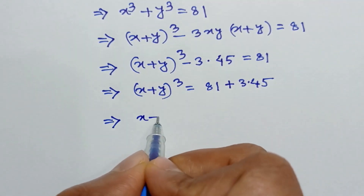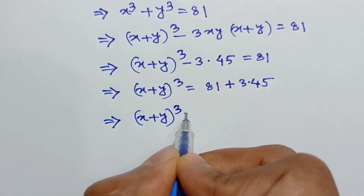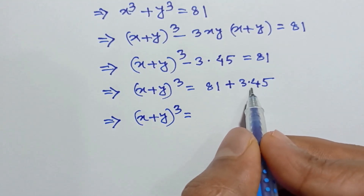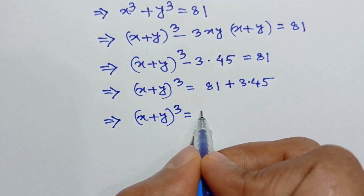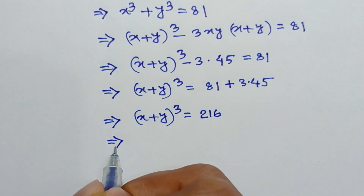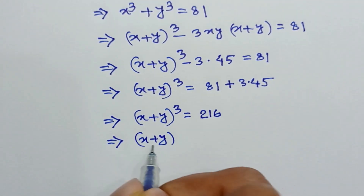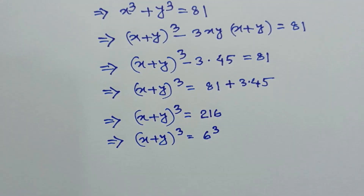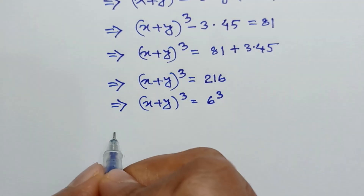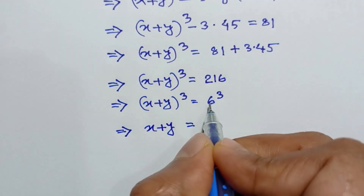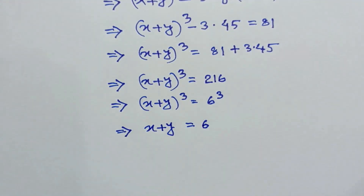So (x plus y) cubed is equal to 81 plus 135, which is equal to 216. Since 216 is 6 cubed, taking cube root of both sides we get x plus y is equal to 6.